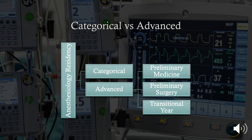Anesthesia is a three-year residency plus an intern year. Categorical residency programs have all four years combined at one location. Advanced programs have you completing an intern year somewhere else and then going to that institution for three years of anesthesia training. Typical intern year options include preliminary medicine, preliminary surgery, and a transitional year, but you can also do pediatrics, OB-GYN, or neurology — there are lots of different options.